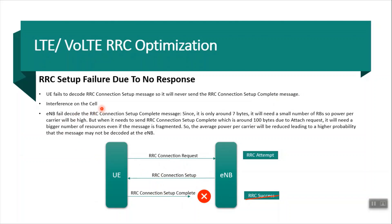Interference on the cell is one reason. Sometimes cells have huge interference and in this case eNodeB cannot properly receive the message from the UE, so the RRC setup will fail. A third reason is that sometimes eNodeB cannot decode the message it received from the UE.